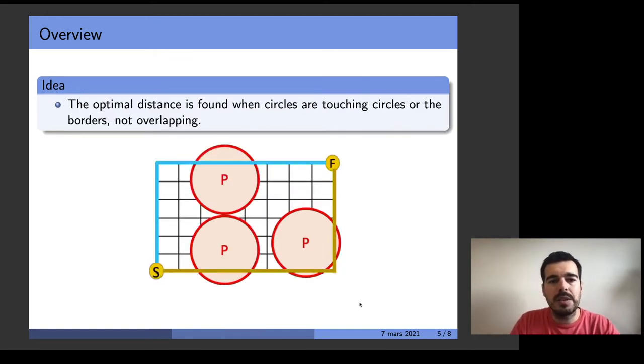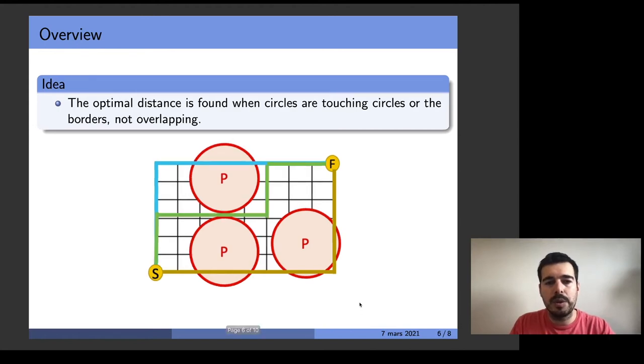The optimal distance is found when circles are touching each other or touching a border. In this example two circles are touching so this means that we can pass through the touching point.